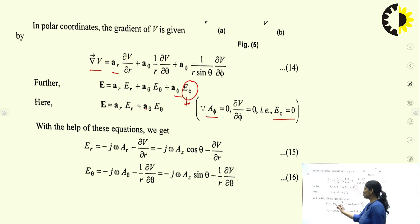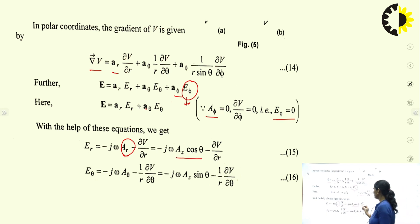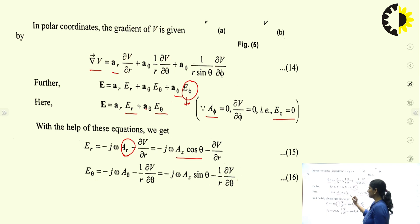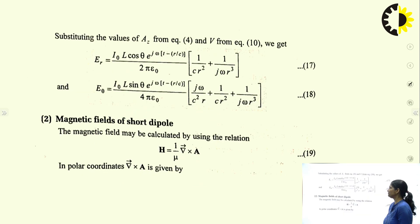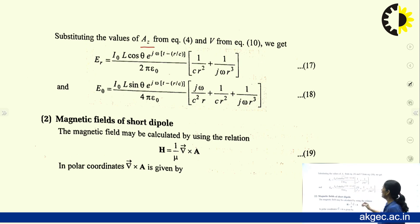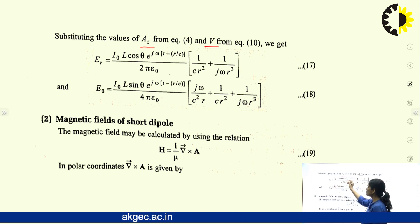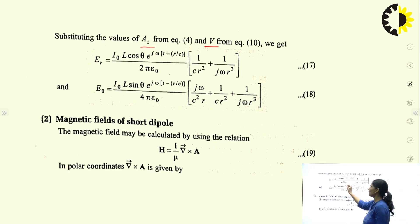E_r is equal to -jω * a_r - ∂V/∂r, where a_r = Az * cosθ. Similarly, E_θ = -jω * a_θ - (1/r)(∂V/∂θ), where a_θ = -Az * sinθ, giving E_θ = -jω * Az * sinθ - (1/r)(∂V/∂θ). Substituting the values of Az and V, E_r = i_0 * l * cosθ * e^(j(ωt - r/c)) * [1/(cr²) + 1/(jω r³)] / (2π * ε_0).